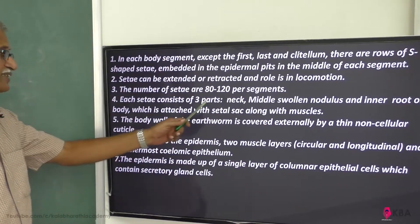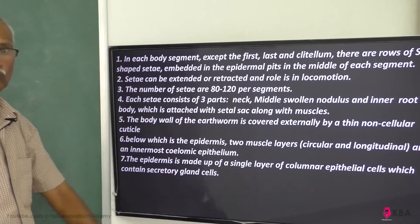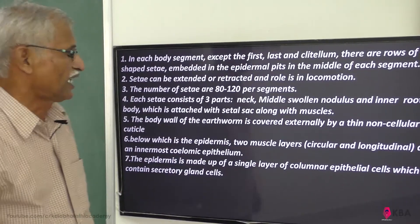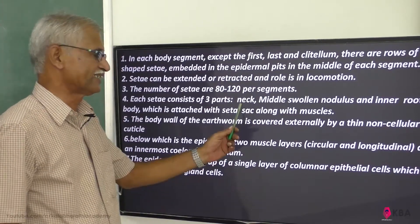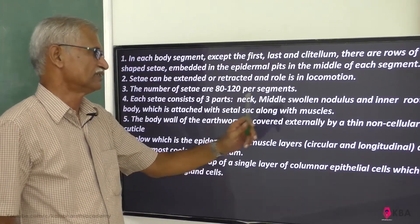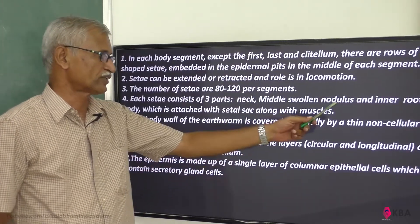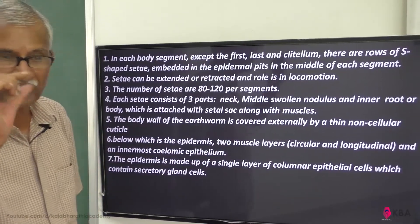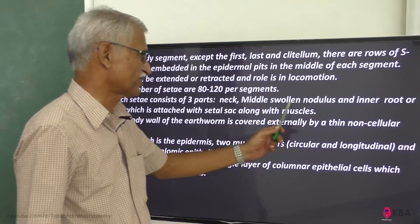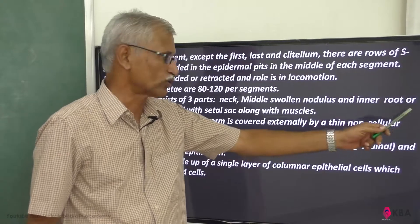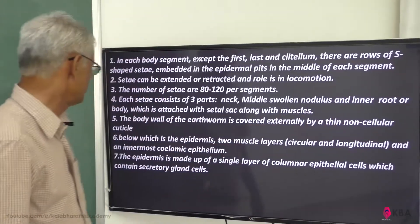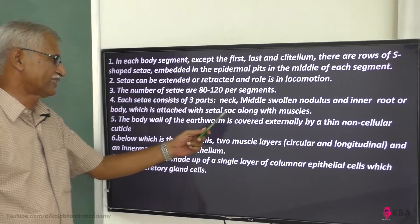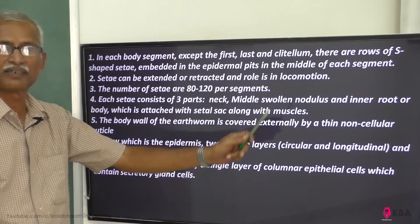Each seta consists of three parts: a neck, middle swollen nodules, and an inner root body which is attached to the setal sac with muscles.